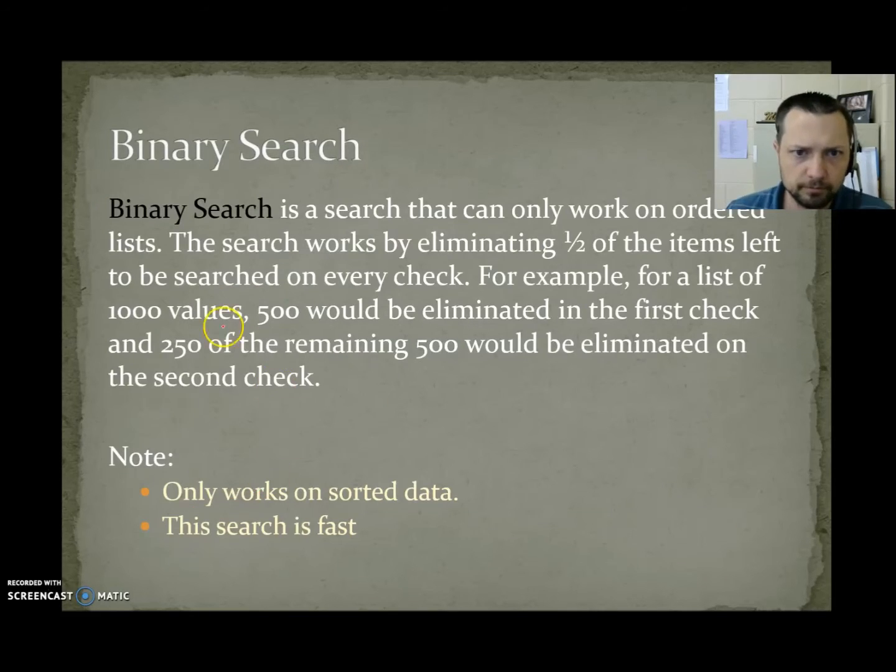Binary search is a search that can only work on ordered lists. The search works by eliminating half of the items that have been unchecked every time it checks a location. For example, for a list of 1,000 values, 500 items would be eliminated on the first check. 250 items of the remaining 500 items would be eliminated on the second check.